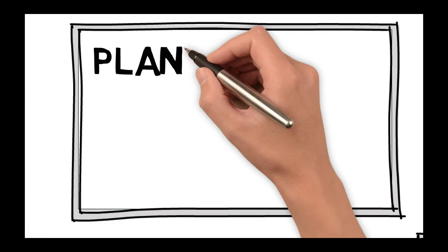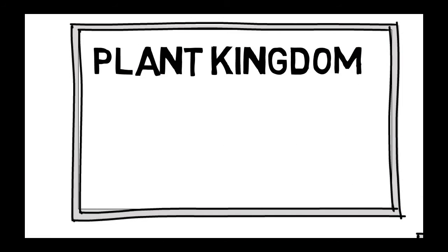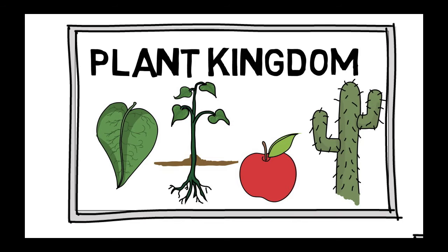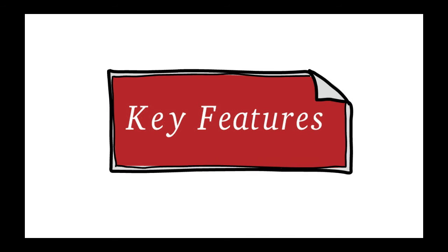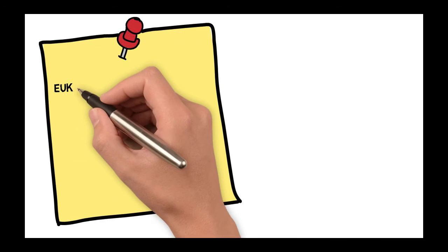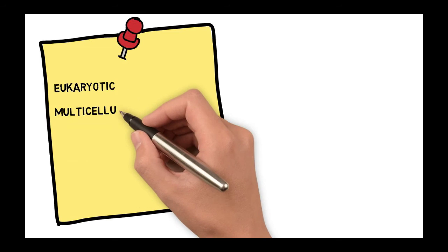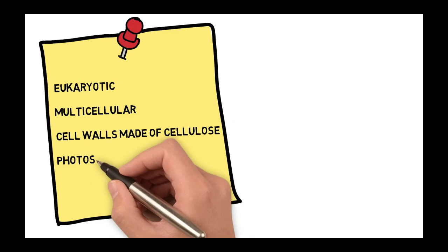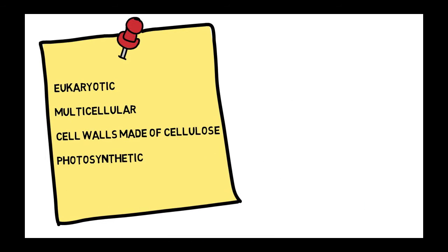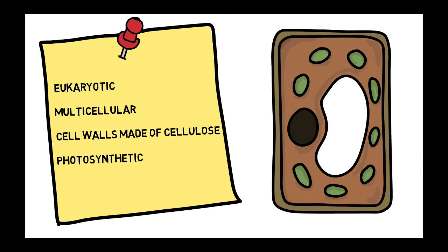The next kingdom is the plant kingdom, which is also a kingdom with great diversity. For your exams you need to know the key features. In order to be classed as a plant, an organism must be eukaryotic and multicellular, have cells with cell walls made of cellulose, and be able to photosynthesise.